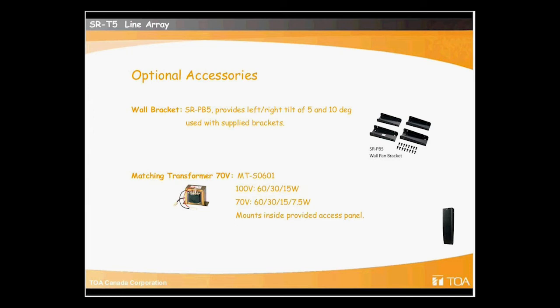We look at the optional accessories. The wall bracket to allow us to tilt it left and right 5 or 10 degrees is the SR-PB5. I'll show you a little picture later on how this mounts onto the existing bracket. This will allow us to tilt the speaker in towards the audience plane. If we wanted to run at 100 volts or 70 volts instead of the 8-ohm low impedance that the speaker is originally designed for, we can add in the MT-S0601 transformer. This mounts inside the speaker so it's out of the way and cannot be seen once it's mounted in.